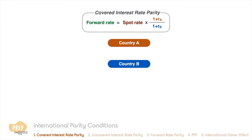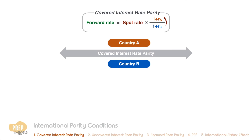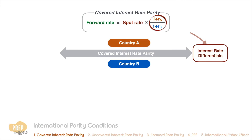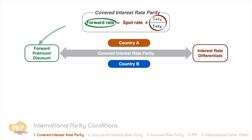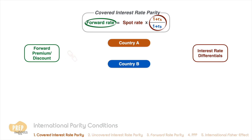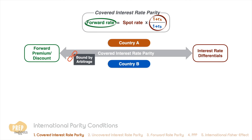Let us summarize what we've learned about covered interest rate parity. For two countries with different currencies, this defines the relationship between the interest rate differentials between the two countries and the forward premium or discount of the exchange rate between them. Covered here means that the relationship is bound by arbitrage.